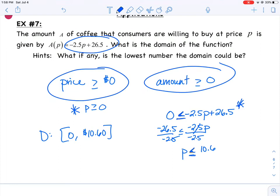We already know that P has to be greater than or equal to zero. But can it be anything else? Well, let's see. If I subtract 26.5 from both sides and I divide by negative 2.5, remember when we're doing inequalities,